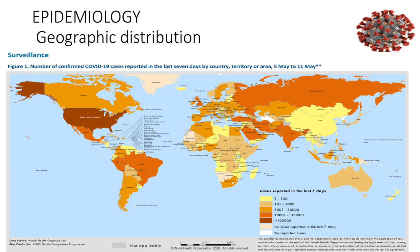Regarding geographic distribution of SARS-CoV-2, globally more than four million patients have been affected as reported by the WHO. An interactive WHO map highlights confirmed cases worldwide. The cumulative incidence in each country varies depending on population density, demographics, extent of testing and reporting, and the timing of mitigation strategies, all of which are very important in determining the incidence rate.